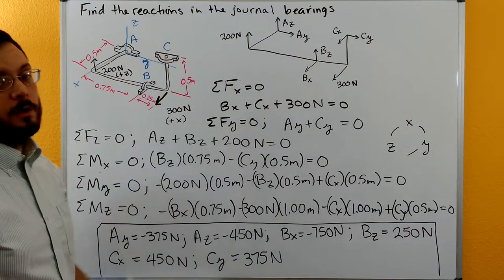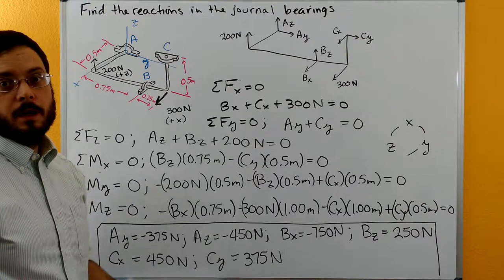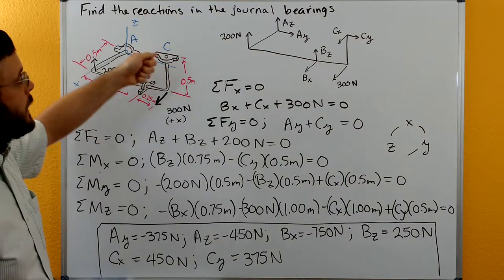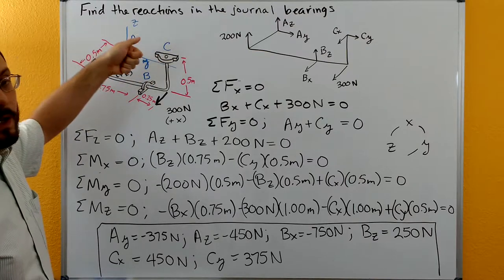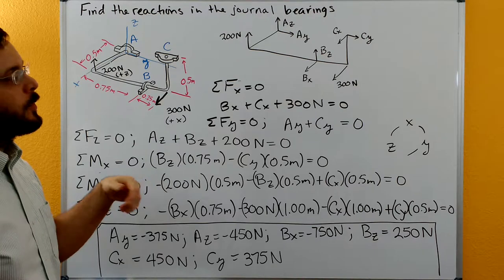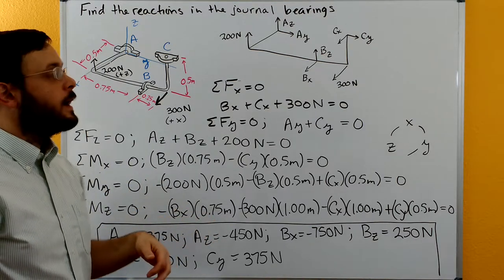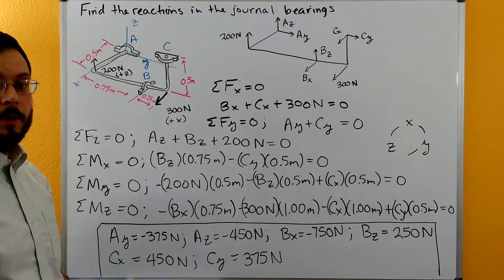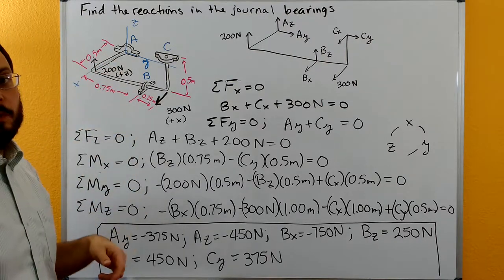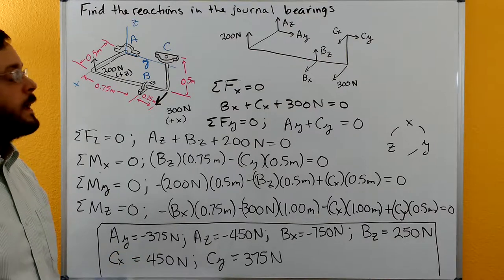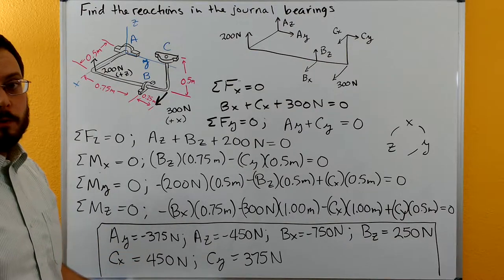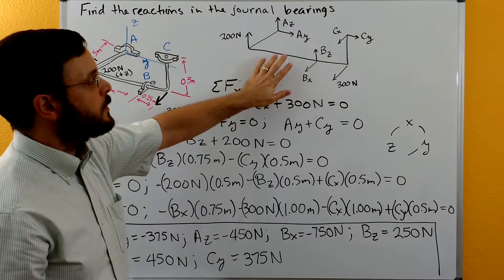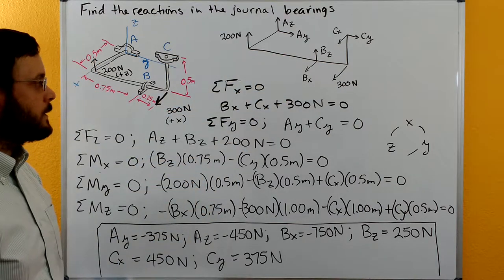So we want to solve for those six unknowns. Journal bearings can also create a moment reaction — if we try to twist the rod around, the bearing can resist that with a reaction moment. However, with this support configuration we have six equations and six unknowns. We have enough unknowns with just the x and y forces, so we don't need to include the moments. We want those bearing moments to be zero — designing a system where bearings must always support a moment causes bearing wear.